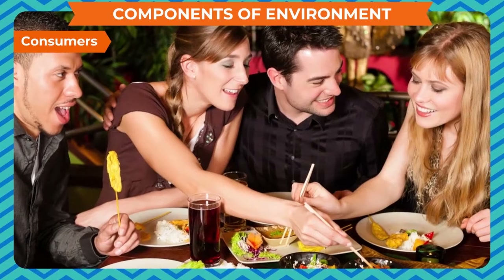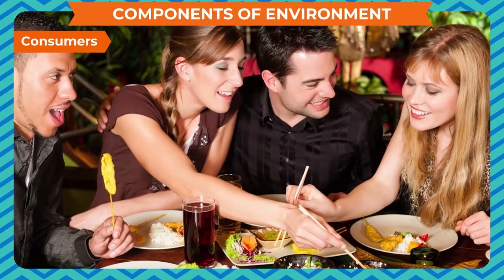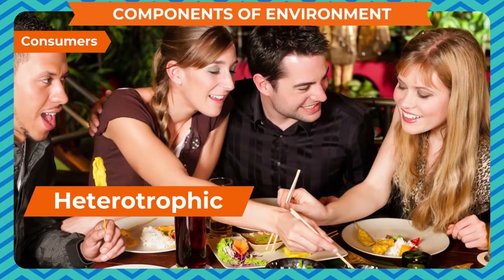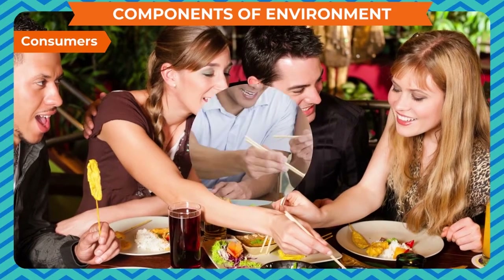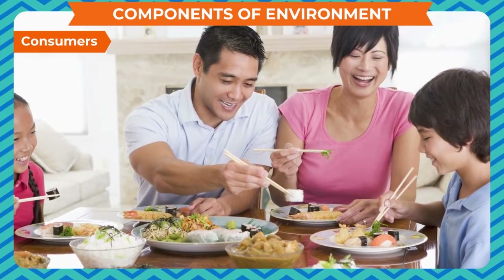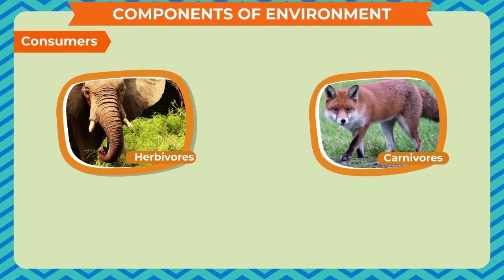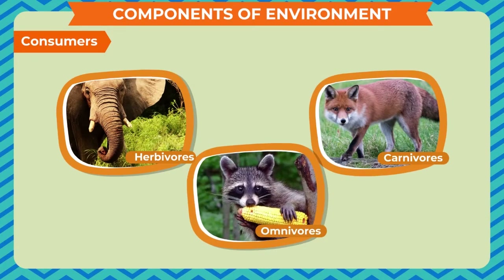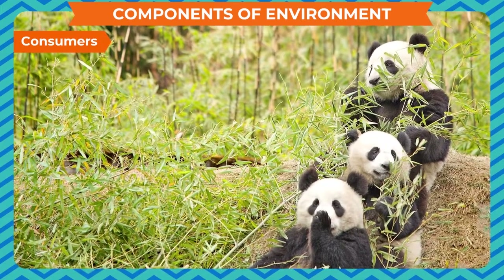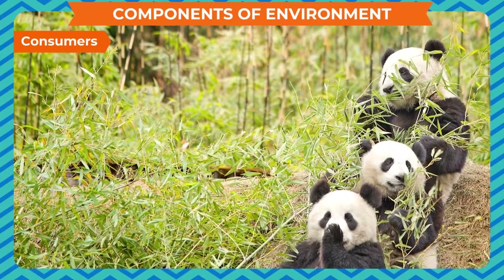Consumers are all living things which consume food prepared by the producers. They are also known as heterotrophs. According to their eating habits, they are categorized as herbivores, carnivores, and omnivores. They either get their food from producers or eat the flesh of other animals.